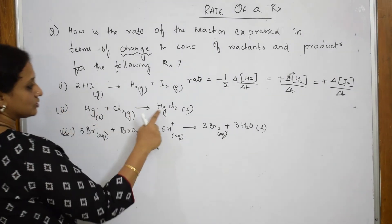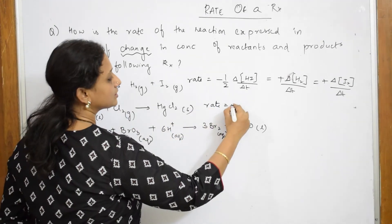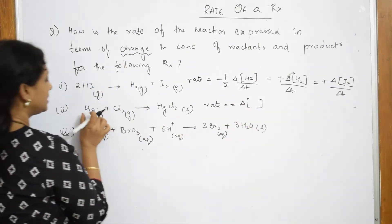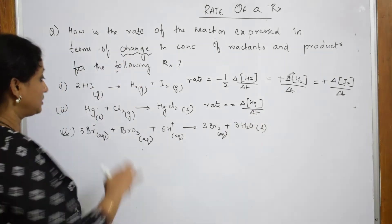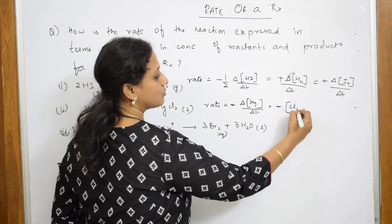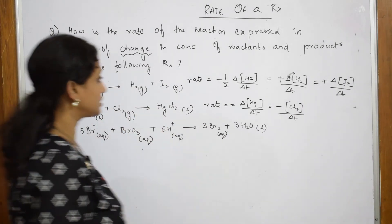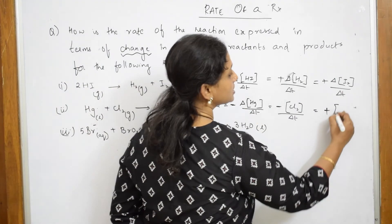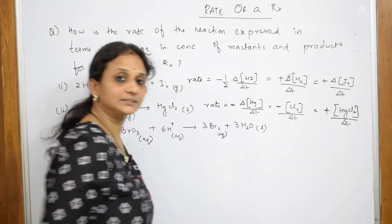For the second reaction, there are two reactants and it is already balanced, so nothing to change for coefficients. Rate is equal to: start with minus delta[Hg] divided by delta T, which equals minus delta[Cl₂] divided by delta T. Coming back to the product — there is no coefficient — so plus delta[HgCl₂] divided by delta T. The second one is done.